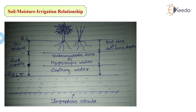The second zone is the intermediate zone or hygroscopic water. In this zone, the moisture is retained by the soil molecules through loose chemical bonds. This water is not helpful for extraction — it is neither drained under gravitational force nor can it be extracted by plant roots. This zone is a compacted one — water can neither be extracted nor drained out. It is called intermediate or hygroscopic water.